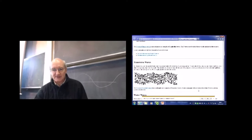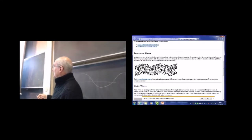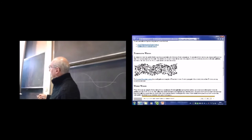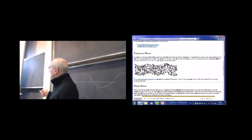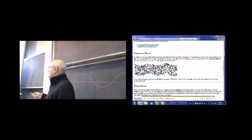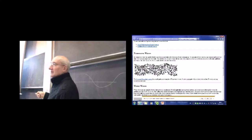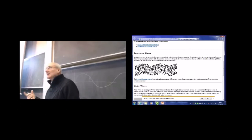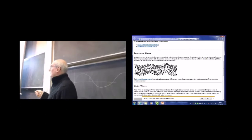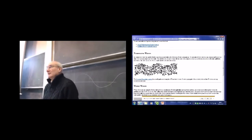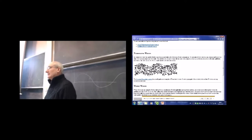Here we've got a transverse wave — the same sort of process. You can pick one particle: all it's doing is moving up and down. But that produces a wave motion. The wave motion, if you follow a crest, is moving left to right, but the displacement of the particles — the oscillations — are actually just up and down, at right angles to the wave motion. That's what makes this a transverse wave. This is the sort of thing we think about when looking at waves on water.